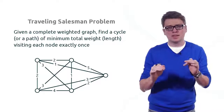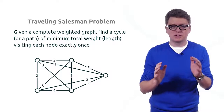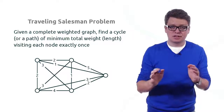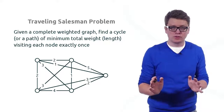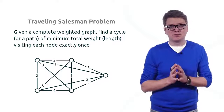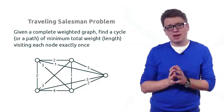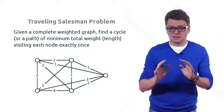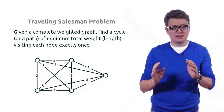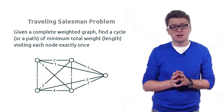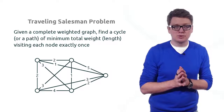Let's focus on a small example. We have a complete undirected weighted graph on five nodes, and we are looking for a cycle that visits every node exactly once. If you try to find such a cycle manually, you'll notice quickly that even for this small example it is not easy.